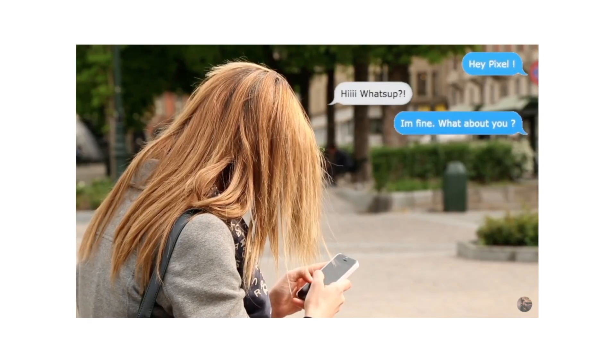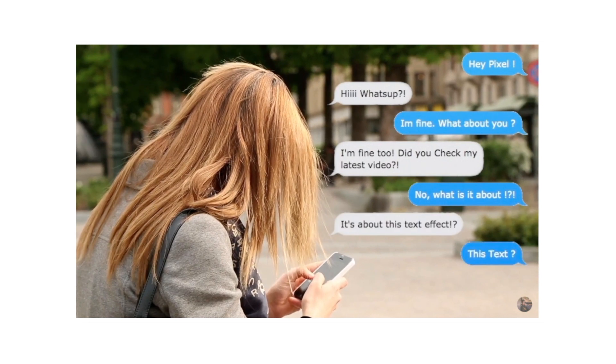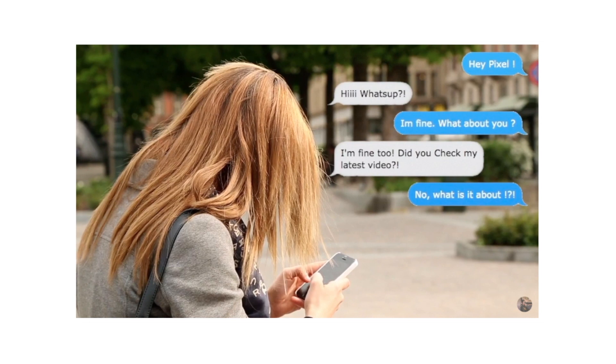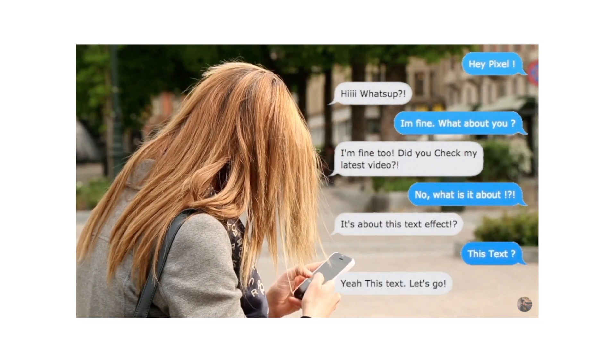This video is an upgraded version of a previous messaging effect tutorial. The previous tutorial created a messaging on-screen effect for Final Cut Pro, but it had a downside: the messages had white edges around them, which looks bad in professional cases. In this upgraded tutorial, the effect is done on a transparent screen in After Effects, then exported and imported into Final Cut Pro or Premiere Pro.